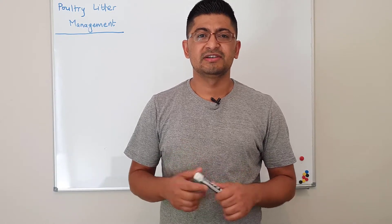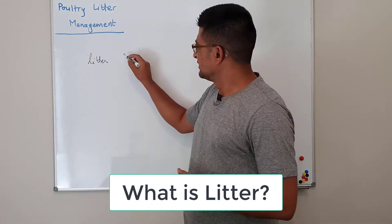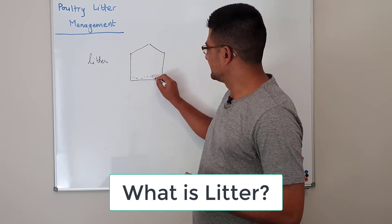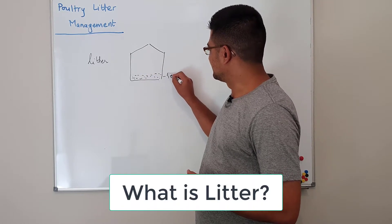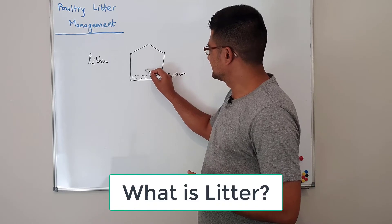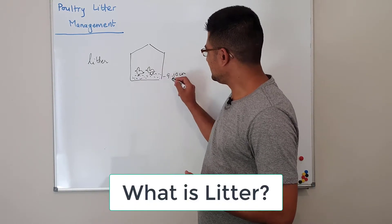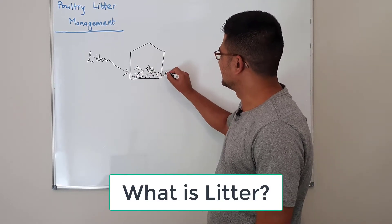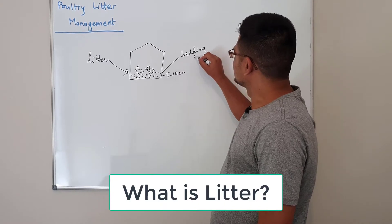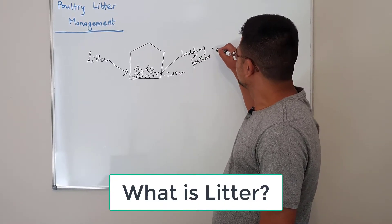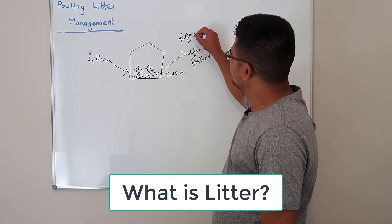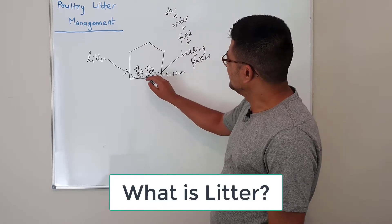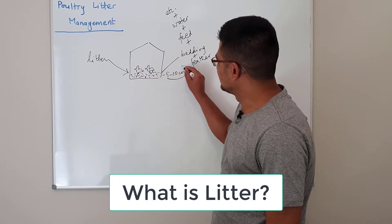So first let's try to understand what is litter. If this is a poultry house, you keep your litter here, which is basically 5 to 10 centimeters, and there are chickens over the litter. This litter material is basically bedding, plus it could have feathers, feed, a little bit of water, and some other materials. Ideally litter is 5 to 10 centimeters, which is the best case scenario.